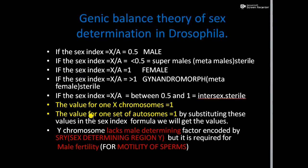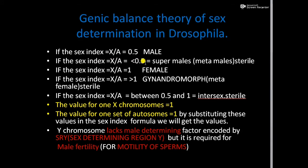The value for one X chromosome is 1 and the value for one set of autosomes is also 1. Substituting these values into the formula X/A, we get values such as 0.5, less than 0.5, 1, and greater than 1. When the sex index equals 0.5, the sex of the individual is male. If the index is less than 0.5, the sex is super males or meta males, which are sterile and do not reproduce.